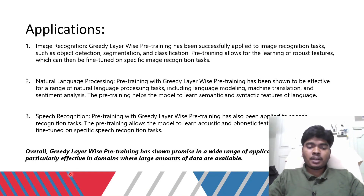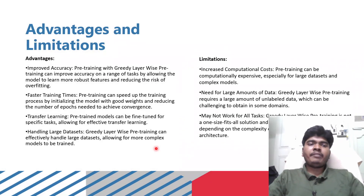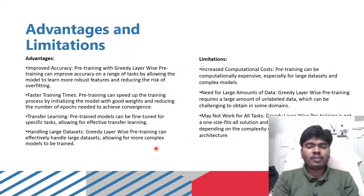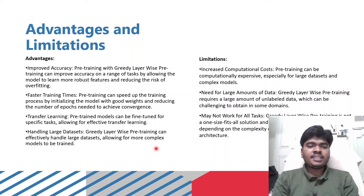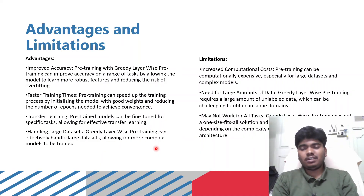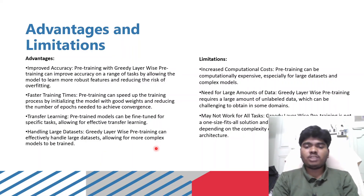Overall, Greedy Layer-wise Pre-training has shown promise in a wide range of applications, particularly where large amounts of data are available. Advantages include improved accuracy, faster training time by initializing the model with good weights and reducing the number of epochs, and enabling transfer learning. Limitations include increased computational costs as the number of epochs and neural networks grows, and the need for large amounts of data, which can be unpredictable.